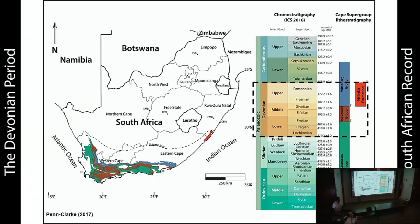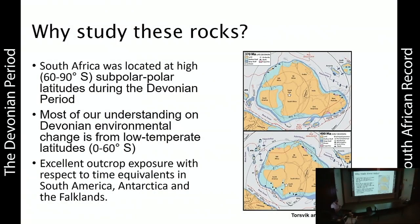Looking at the Devonian period of South Africa, we've got a very nice record. It extends from the topmost Table Mountain Group, the entire Bokkeveld Group, as well as the lower Witteberg Group, and the dubious Imstakaba Formation, which used to be part of the Natal Group but now seems to be linked through to the Cape Supergroup. Why should we study these rocks? By virtue that a lot of the information we have on the Devonian period is from low latitudes; we don't really know what's happening at these high polar to sub-polar latitudes. It forms a very interesting field of study — low-hanging fruit, not many people work on this.